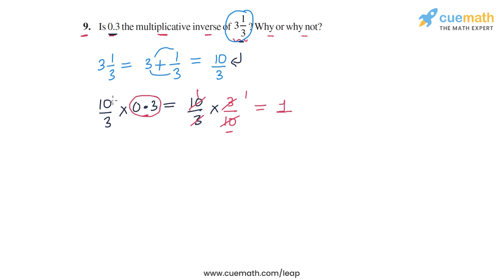0.3 when multiplied with 10 by 3 gives us 1. This means that 0.3 is the multiplicative inverse of 3 and 1 by 3.